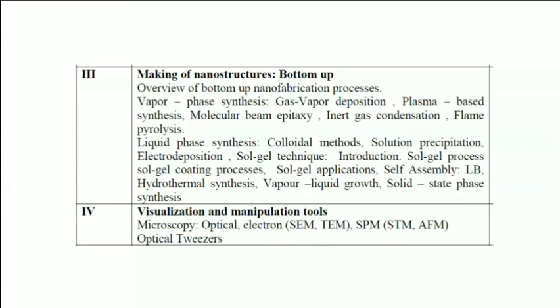The last chapter belongs to Visualization and Manipulation Tools. Once you prepare the nanomaterial, you should be able to check whether the material you have prepared is in the range of nano or not. What is the size of this material? What is the shape of this material? Whether it is in rod shape or spherical shape, and what are the details about its microstructure? If you want to observe that, then you need special visualization techniques which are more powerful in magnification.